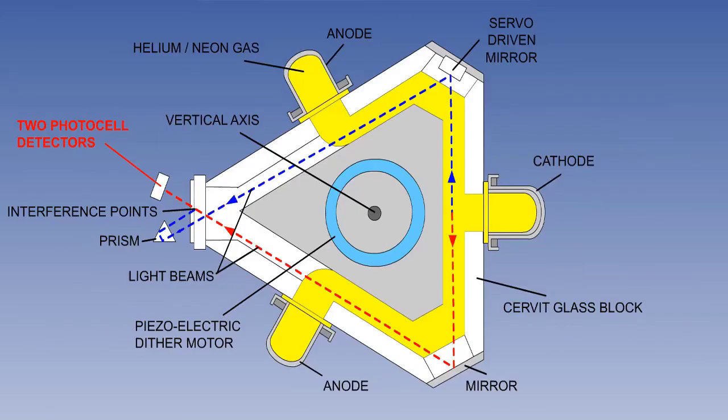The laser gyro contains a photoelectric detector. It can tell if the interference pattern is static, and if it is moving, it can detect the direction and rate of rotation.